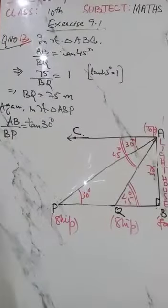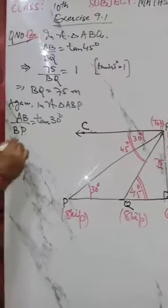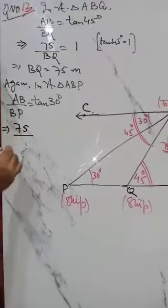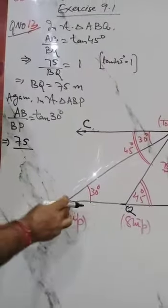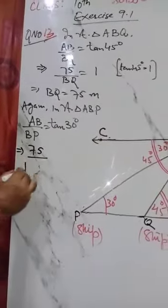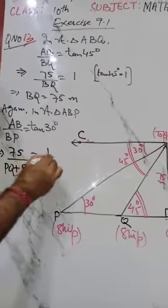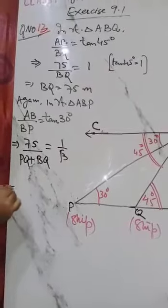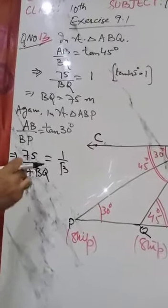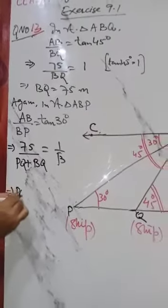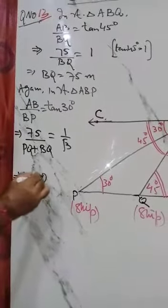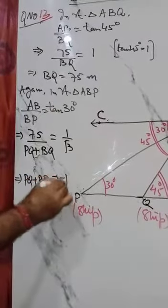Now AB is 75, we know it's given. BP, we have to divide as PQ plus BQ. Tan 30 is 1 upon root 3, so cross multiplication: PQ plus BQ is equal to 75 root 3.